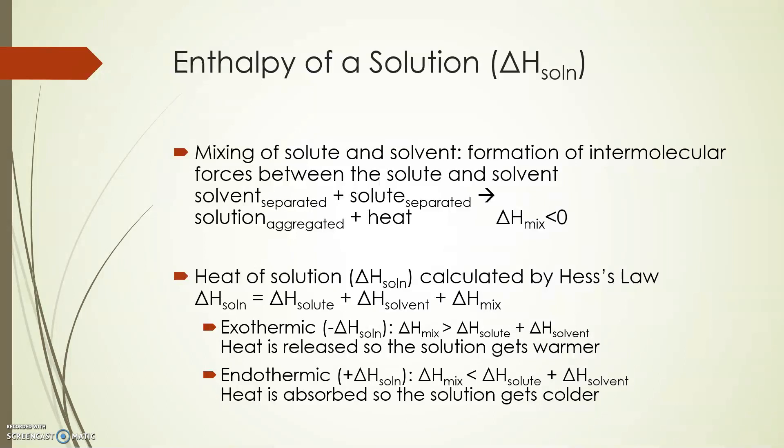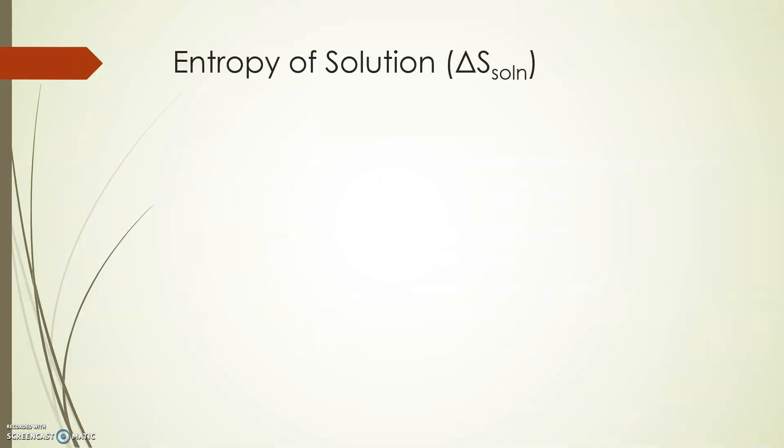Now, let's look at entropy. Entropy is a measure of disorder, of chaos in your system. It can be viewed as the number of positions or energy levels that are possible for the system.